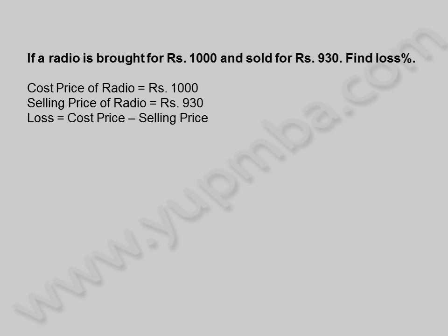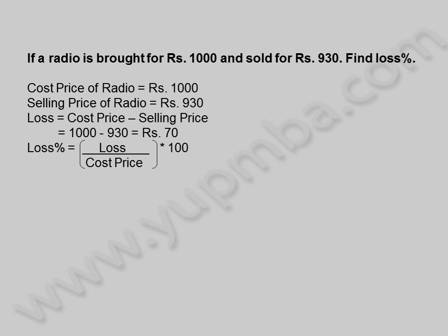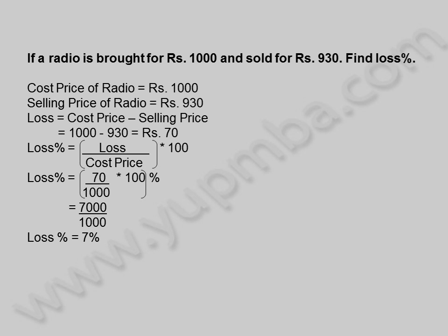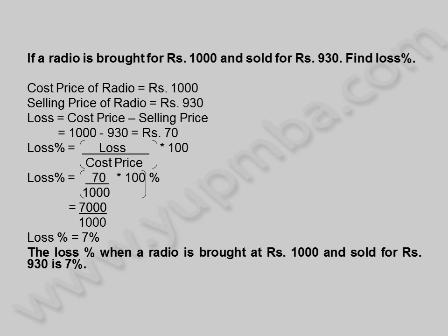Loss is equal to cost price minus selling price. 1,000 minus 930 is equal to 70 rupees. Loss percentage is equal to 70 divided by 1,000 into 100 percentage, which equals 7,000 by 1,000. Loss percentage is equal to 7 percentage. The loss percentage when a radio is brought at 1,000 rupees and sold for 930 rupees is 7 percentage.